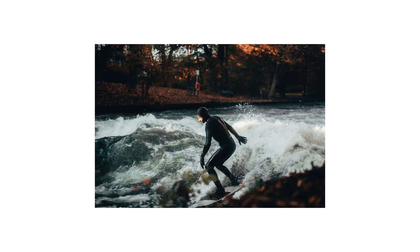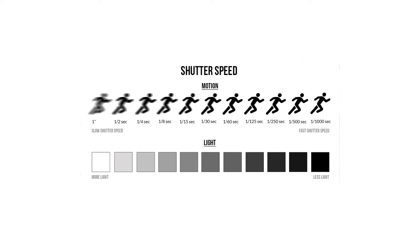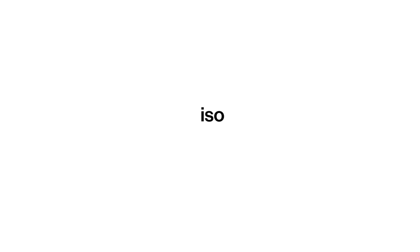Apart from motion, shutter speed also affects the amount of light the camera takes in. A slower shutter speed means more light is going into your camera because the shutter takes longer to close, so more light seeps in. But a faster shutter speed means less light is going in. So — ISO.